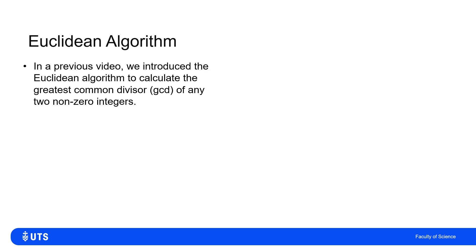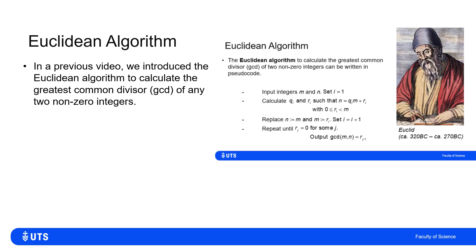Our good friend Euclid is back. If we think of the Euclidean algorithm that we've seen in a previous video for calculating the greatest common divisor of any two non-zero integers, here's the slide that we had previously and the algorithm that we followed.